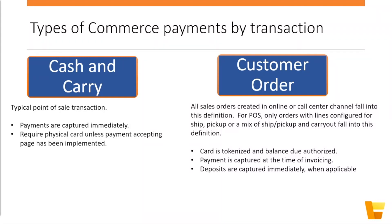Within customer orders, there are a few unique things. For example, the card is tokenized and the balance due is authorized at the time of order creation. Later, when the order is fulfilled, a payment is captured — typically at the time of invoicing. We can also capture deposits for those orders.